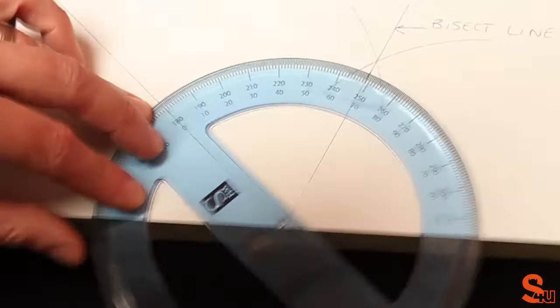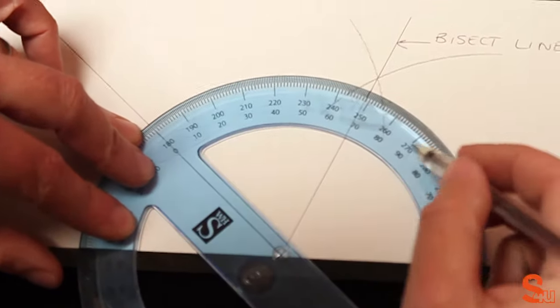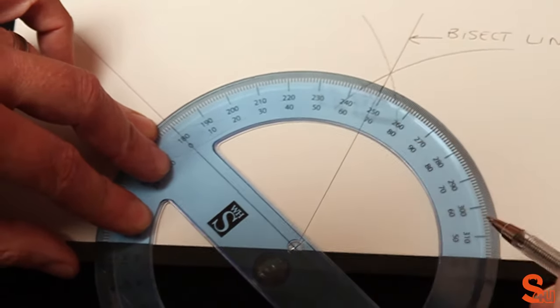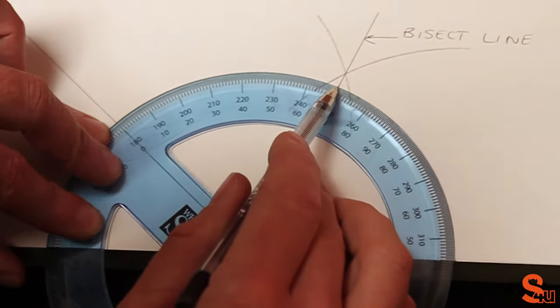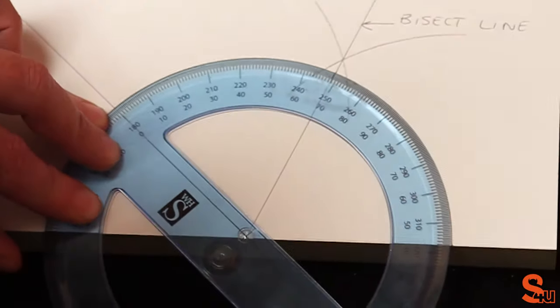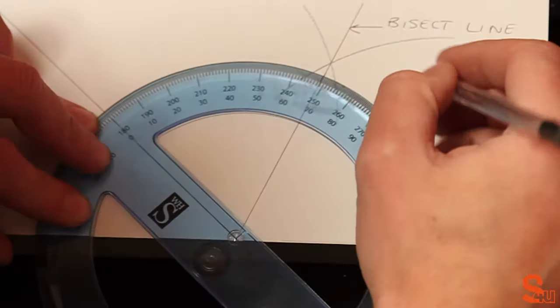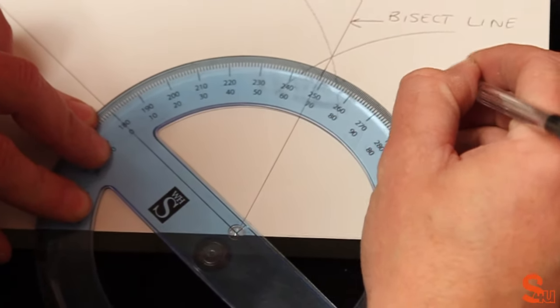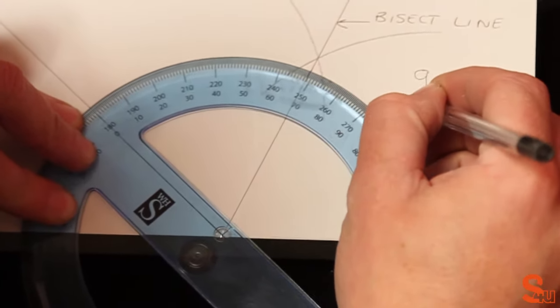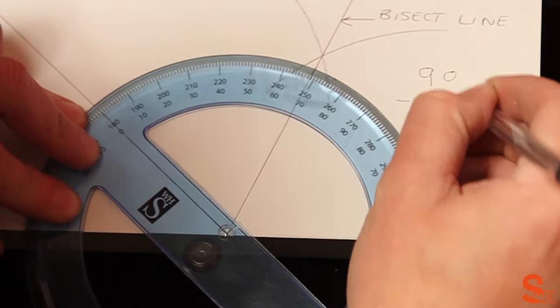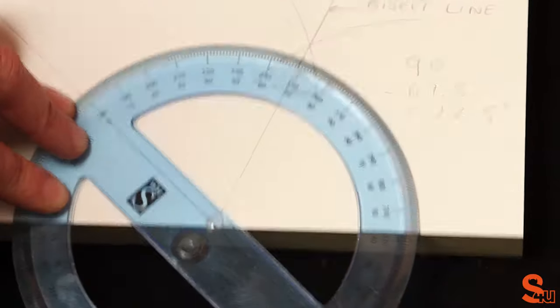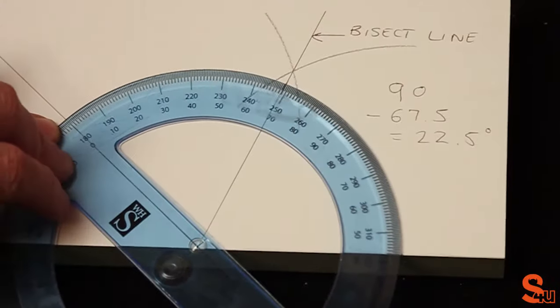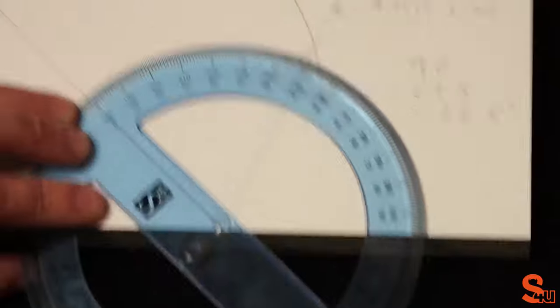Place your protractor along your bevel line. Make sure it's in the middle. This should show you that from the bisect line to the 90 degrees is the angle we're looking for. So what we have to do is 90 degrees minus 67.5, which gives us the angle of 22.5 degrees.